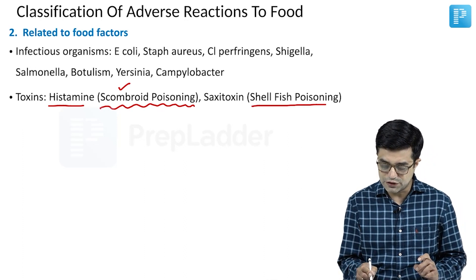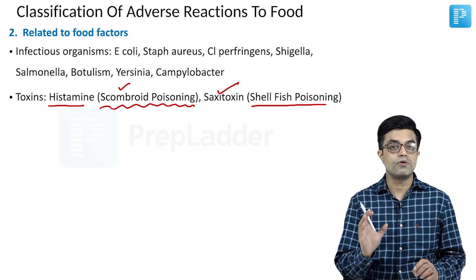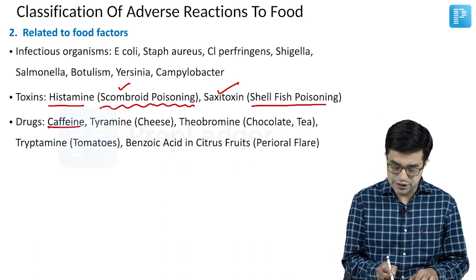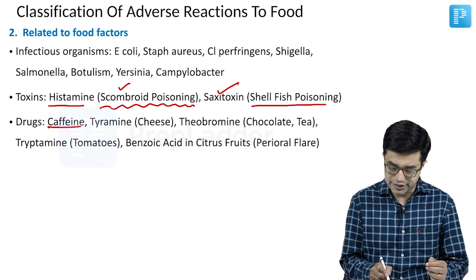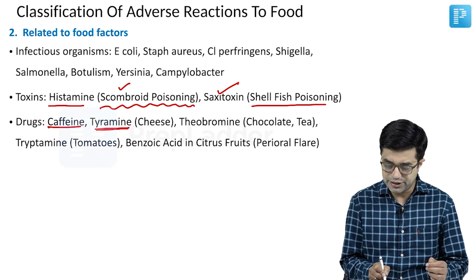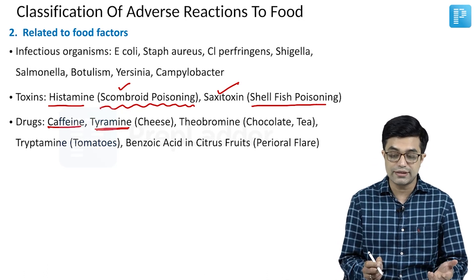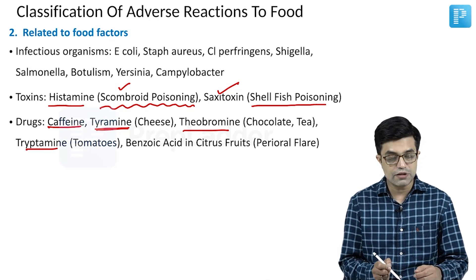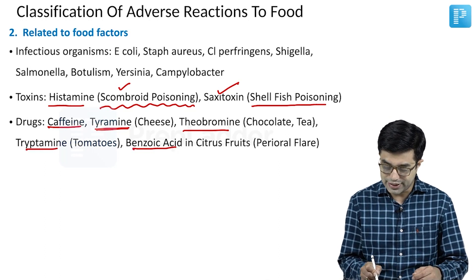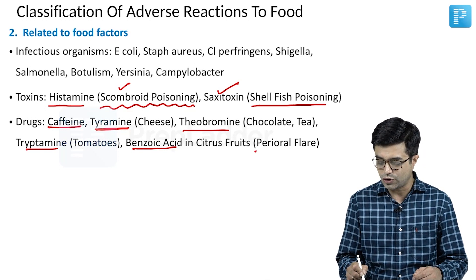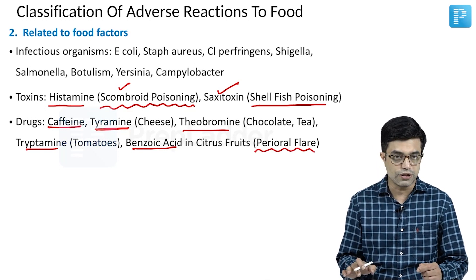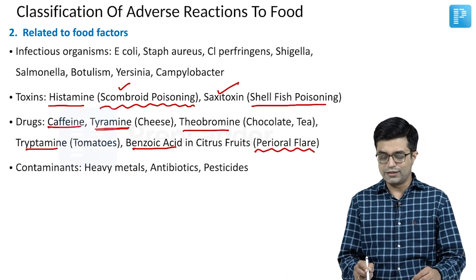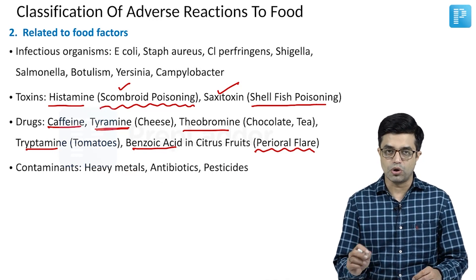Shellfish poisoning can lead to the release of saxitoxin, which can also produce food intolerance. Then we have drugs like caffeine, tyramine present in processed cheeses, theobromine present in chocolate and tea, tryptamine present in tomatoes, and benzoic acid in citrus fruits which can cause perioral flare. Contaminants like heavy metals, antibiotics, and pesticides can also produce food intolerance.